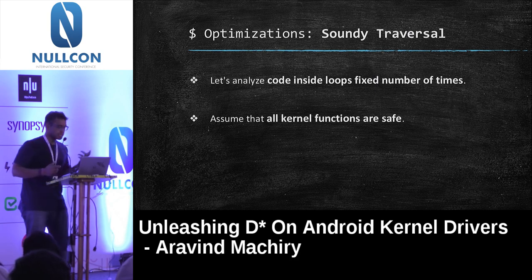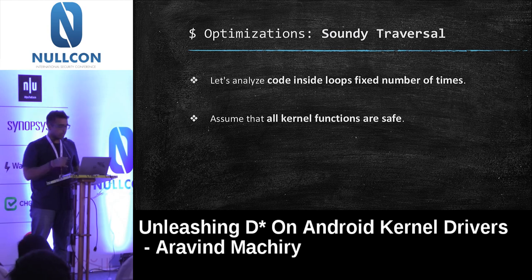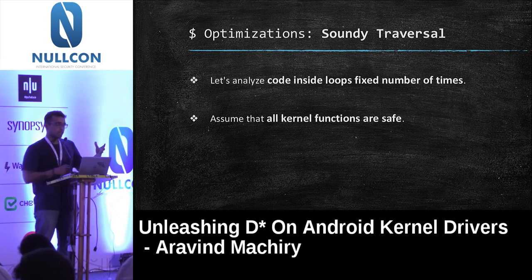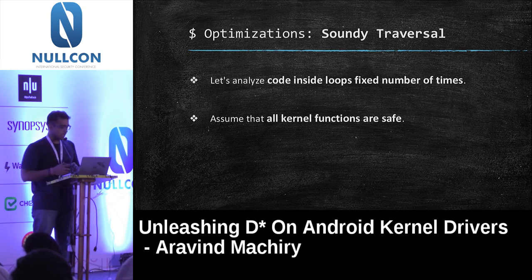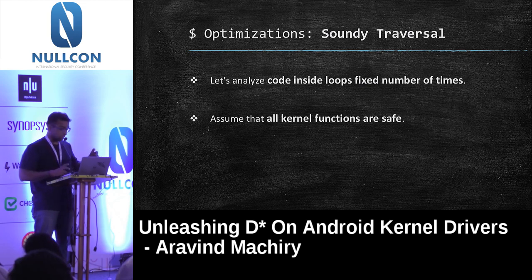To handle loops, we use a technique dependent on data flow: we iterate loops a fixed number of times by looking at the structure of the loop, independent of the complexity of instructions within it. For kernel functions, we assume they are all safe. This means we lose some bugs, but our results become a lot more precise — we reduce the number of warnings significantly.